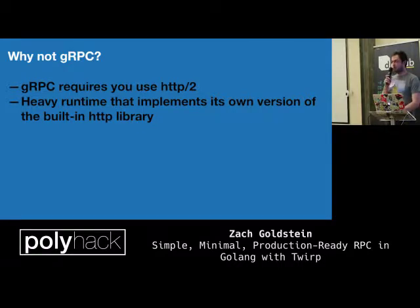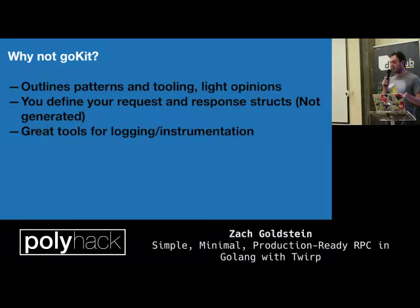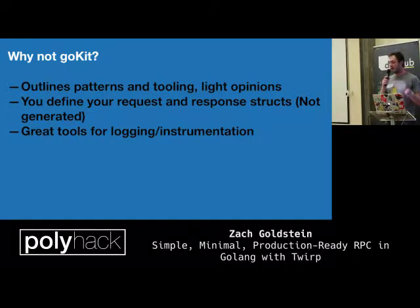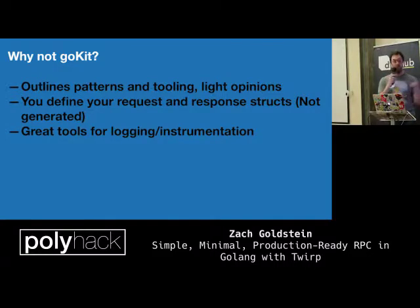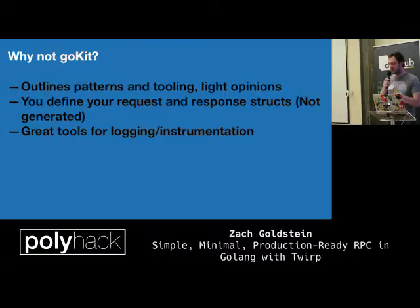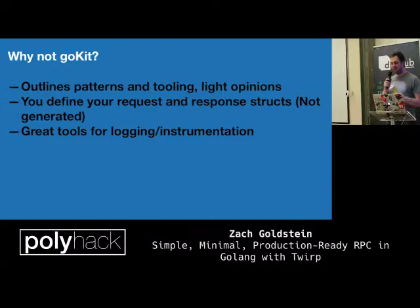Another good option is Go Kit, which is much more minimal — a kit of tools for doing similar things. It has light opinions and lots of patterns, but the difference is it doesn't generate code. You have to manually handle taking a request object and pulling out the model objects yourself, though it does provide patterns for how to do it. It also has opinions about logging and instrumentation, which Twirp doesn't really have opinions about.